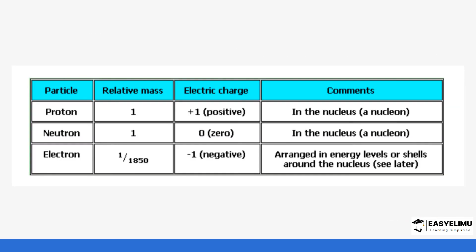To summarize the subatomic particles: protons have a relative mass of one and are positively charged, found in the nucleus. Neutrons also have a mass of one, have no charge, and are in the nucleus — together with protons they form the nucleons. The electron is the smallest particle, found on the outer shells or energy levels, is negatively charged, and has a very small mass. That is why most of the mass of the atom is concentrated in the nucleus.